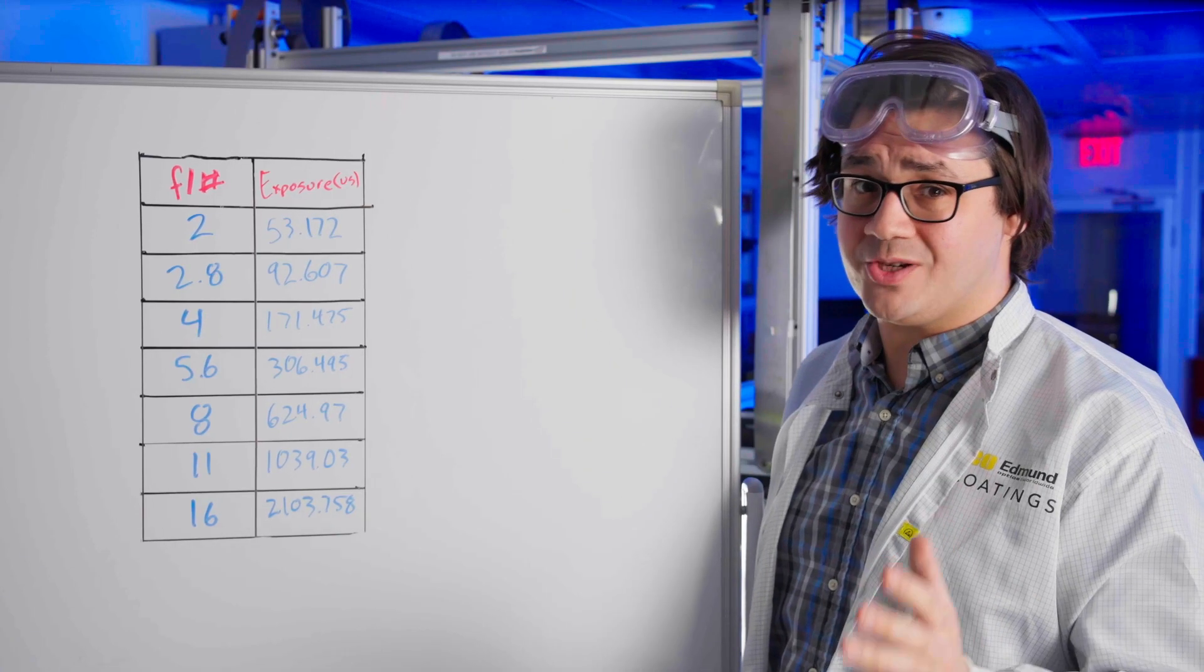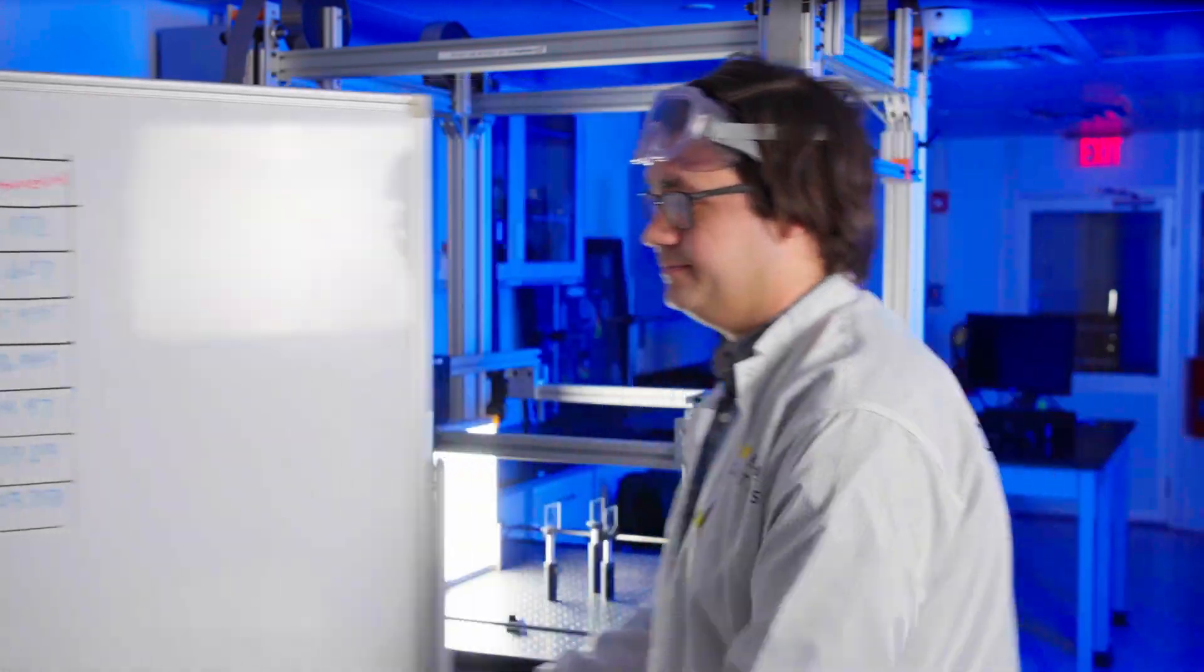Now that we understand aperture, how do we use it? If your application does not have a depth of field requirement, I would likely recommend running this lens at around f4. This will get you the best performance possible. However, if your application is in a light-starved environment, open it up. And if you need a deeper depth of field, stop it down.